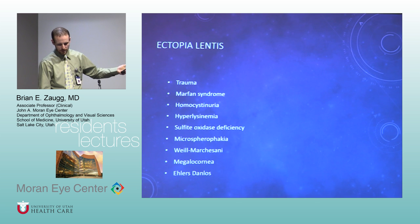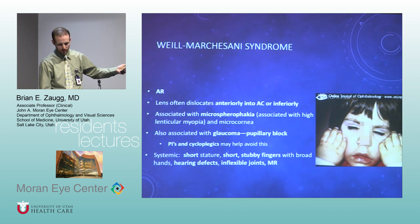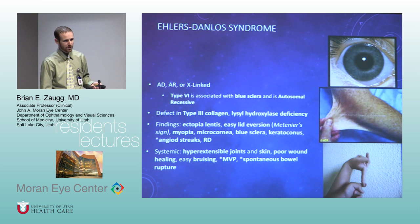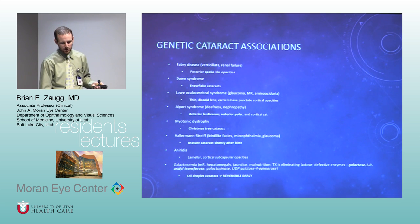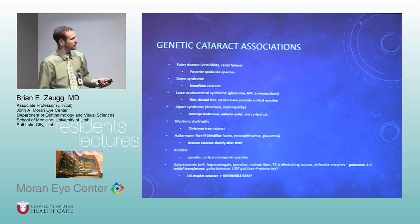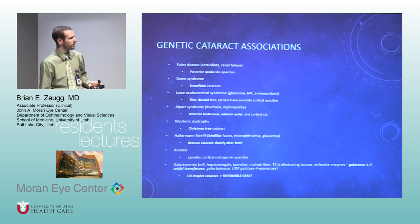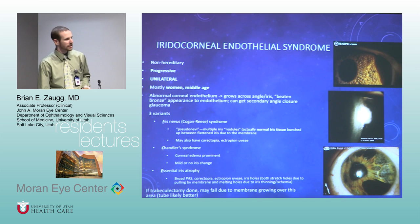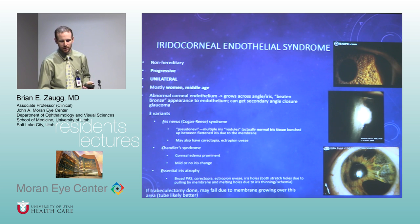Ectopia lentis: causes include Marfan's, homocystinuria, Weill-Marchesani, and Ehlers-Danlos — connective tissue disease causing loosening of everything. Genetic cataract associations are high yield: myotonic dystrophy with Christmas tree cataracts, anterior lenticonus with Alport syndrome, mature cataracts in Hallermann-Streiff, the oil droplet cataract with galactosemia that goes away if you treat the galactosemia without surgery, and ICE syndromes — Cogan-Reese, Chandler's, and essential iris atrophy with differences in the iris component. Lots of info in cornea, but easy to test because you can take pictures of it.